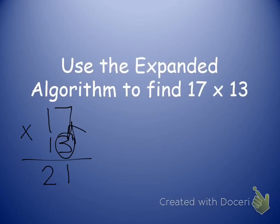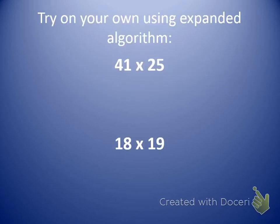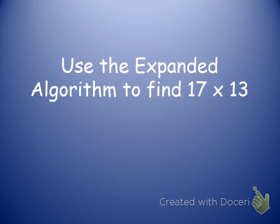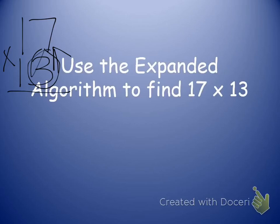I'm going to go ahead and erase this and rewrite it to give myself more space. You should have plenty of space in your math journals. So 17 times 13. Again, my 3 multiplied straight up times my 7 gives me 21. So I write 21 down below.